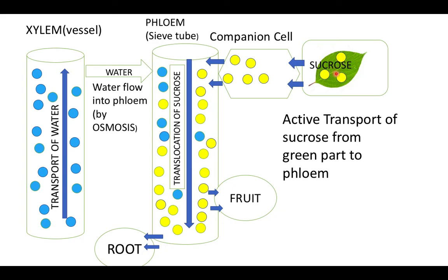Sucrose is produced in the leaves and green parts. Active transport of sucrose loads it from the leaves into the adjacent companion cells and then into the phloem. This is called active transport of sucrose from the green parts to the phloem. Inside the companion cell there is a small amount of food, and from the companion cell the sucrose enters the sieve tube through diffusion, because there is higher concentration in the companion cell and lower concentration in the sieve tube.